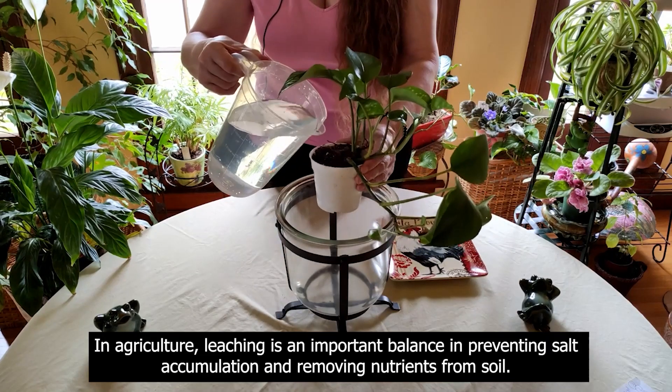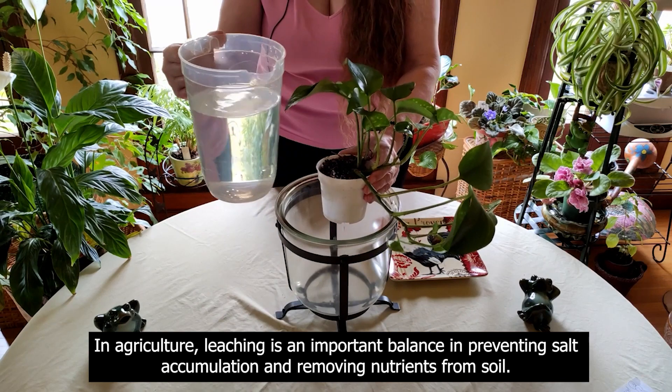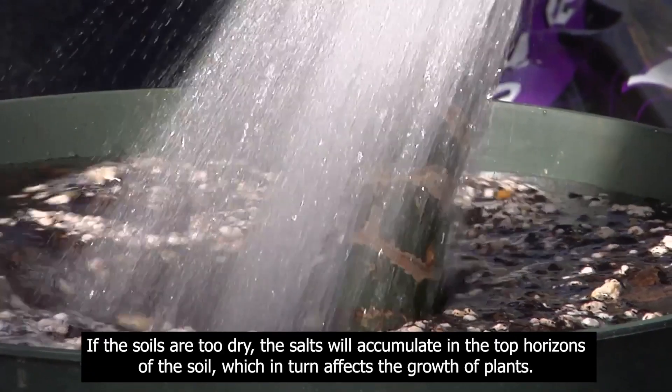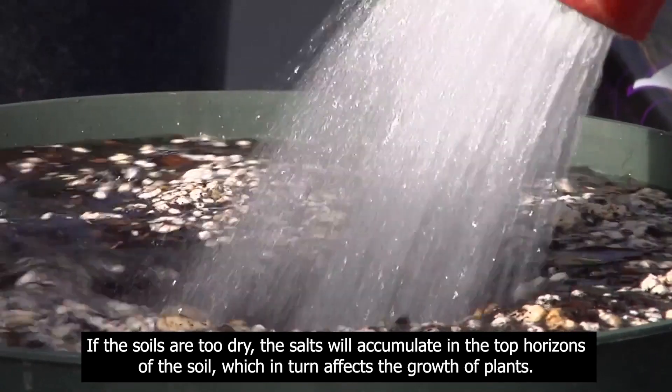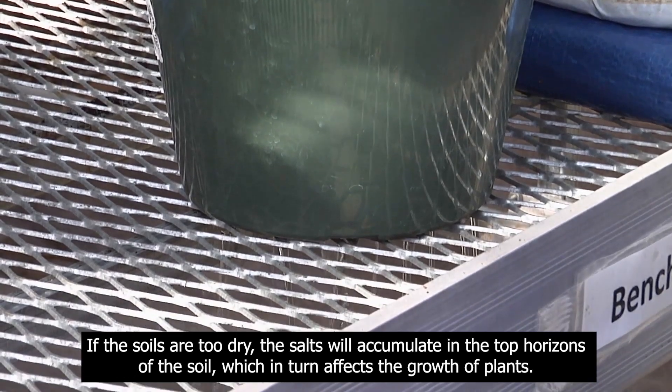In agriculture, leaching is an important balance in preventing salt accumulation and removing nutrients from soil. If the soils are too dry, the salts will accumulate in the top horizons of the soil, which in turn affects the growth of plants.